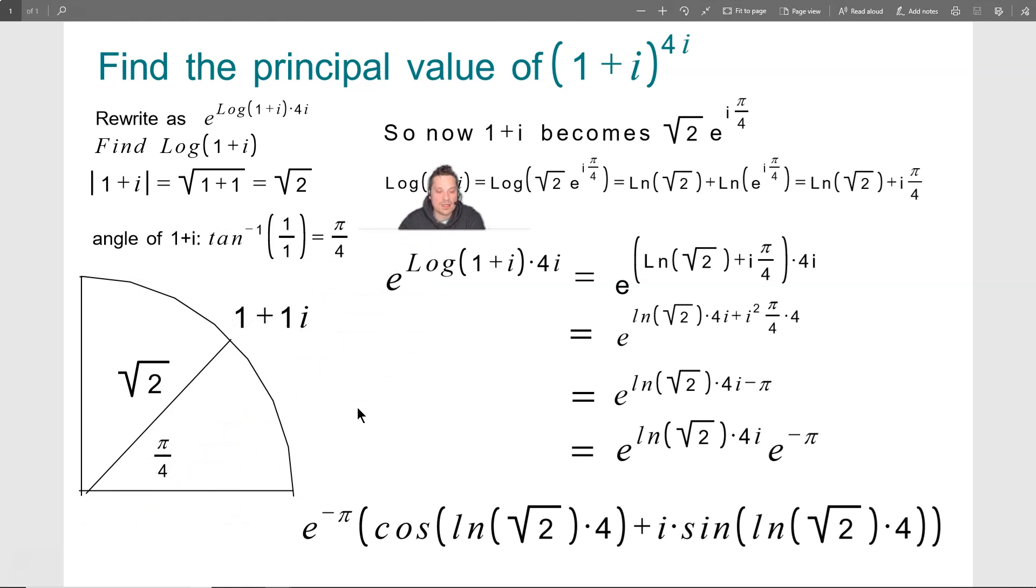So now, basically, 1 plus i becomes this square root of 2 times e to the i pi over 4. So I'm writing my number from this 1 plus i form into this exponential form. This is the radius, the magnitude, if you like the modulus, the length of the number, times e, i, and then the angle that the number makes with respect to the positive horizontal axis.